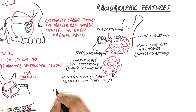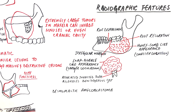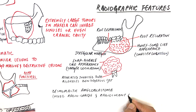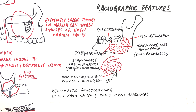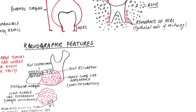One variant of ameloblastoma that possesses different radiographic characteristics is the desmoplastic ameloblastoma. Under radiography, the desmoplastic type shows a mixed radiopaque and radiolucent appearance, and this mixed radiographic appearance is due to the osseous metaplasia of the dense fibrous septa of the bone.